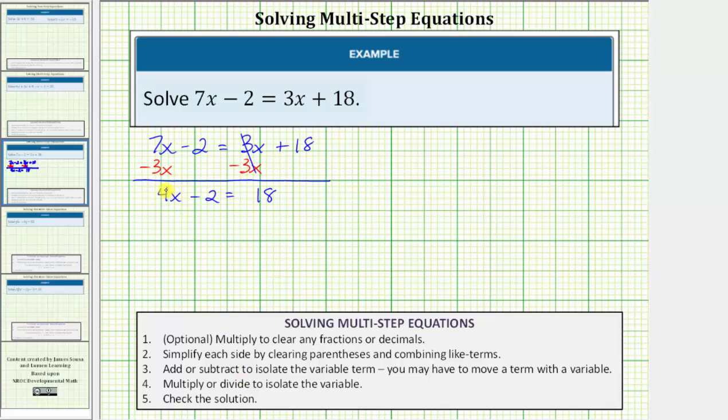To isolate the variable term, we want to undo this minus 2 by performing the inverse or opposite operation. The opposite operation of minus 2 is plus 2. So for the next step, we add 2 to both sides of the equation. And now we simplify.